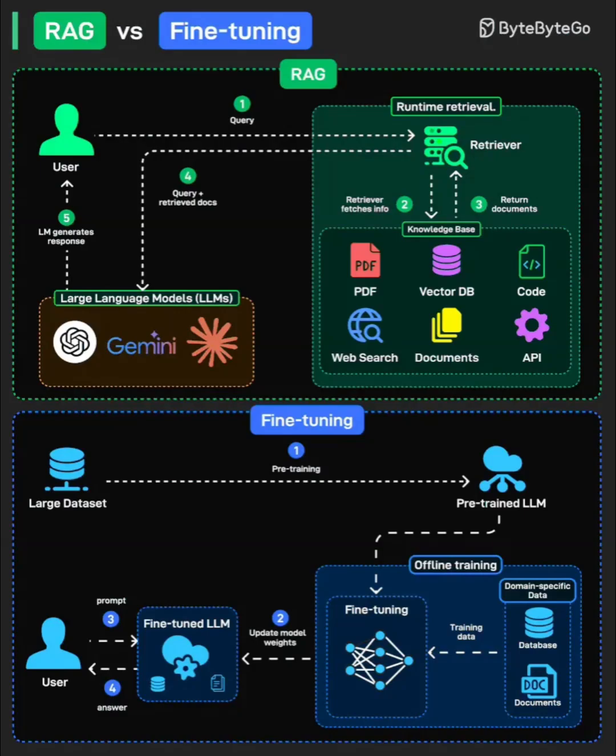The bottom line: RAG and fine-tuning solve different problems. RAG is about dynamic knowledge retrieval. Fine-tuning is about behavior and domain specialization. Understand your use case, your data update frequency, and your resource constraints before you choose.